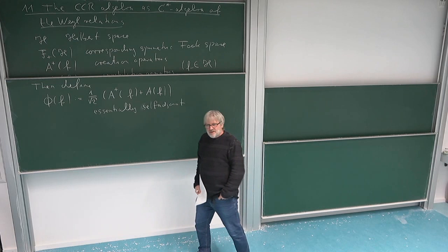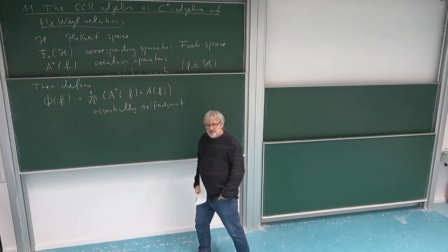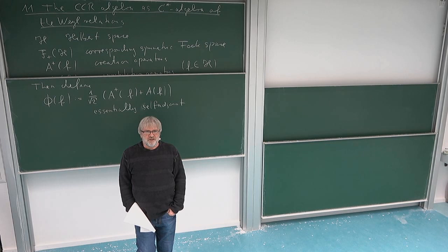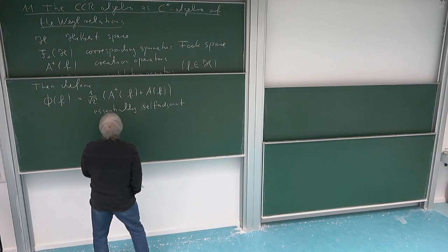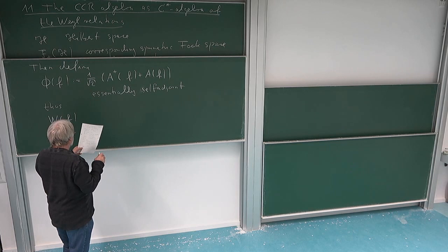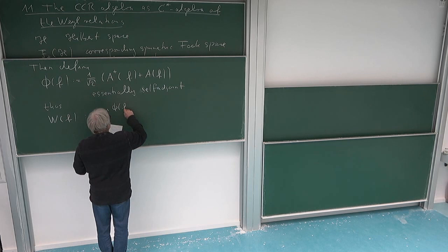They are still unbounded, and in order not to have to deal with the pathologies for unbounded operators, we go over to the unitary groups which they generate — the bounded operators which by functional calculus contain the same information. So the objects we really investigate are the unitary groups generated by those: W(f) = e^{i φ(f)}, defined by functional calculus for self-adjoint operators.